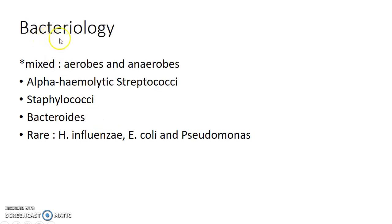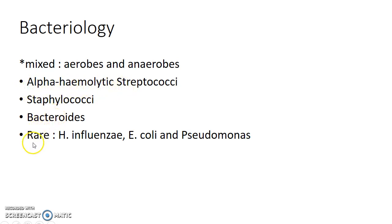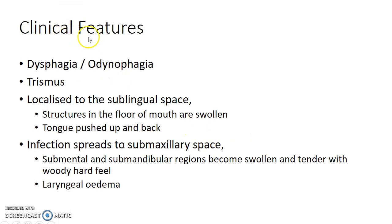Ludwig's Angina is a mixed infection, meaning both aerobes and anaerobes are involved. The most common organisms are alpha-hemolytic streptococci, staphylococci, and Bacteroides. Other rare organisms involved include Haemophilus influenzae, E. coli, and Pseudomonas.